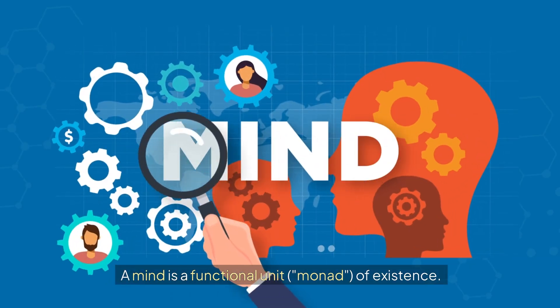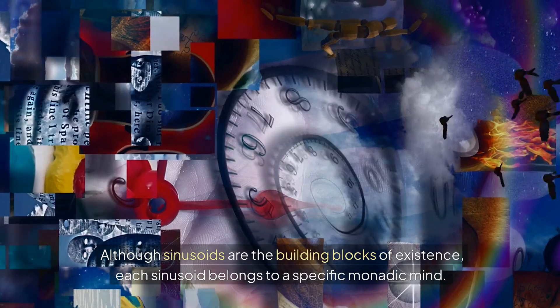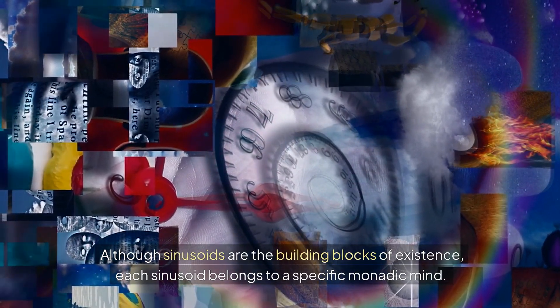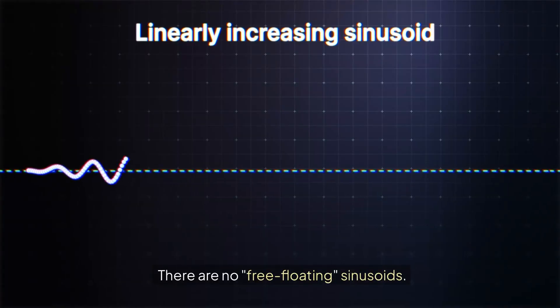A mind is a functional unit, monad, of existence. Although sinusoids are the building blocks of existence, each sinusoid belongs to a specific monadic mind. There are no free-floating sinusoids.